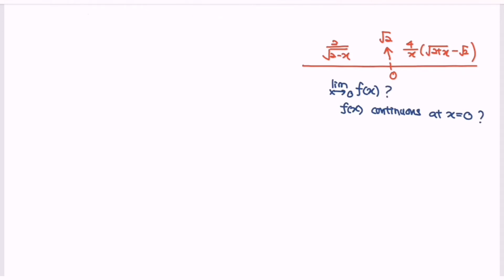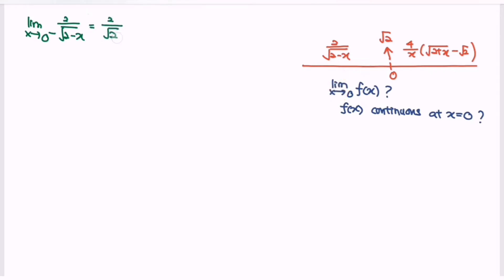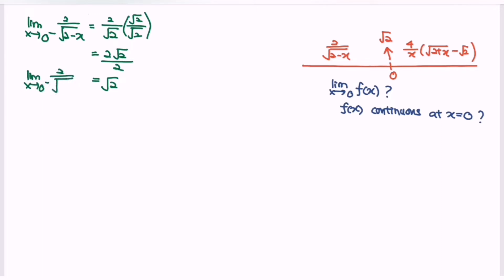Kindly focus on the left-hand limit: the limit when x approaches 0 from the left for the function 2 over square root of 2 minus x. Kindly substitute the value 0, and we will have 2 over square root of 2. Rationalizing the denominator by multiplying with the conjugate, which is square root of 2. Simplifying, we get 2 multiplied with square root of 2 over 2. So finally the answer is square root of 2. The limit when x approaches 0 from the left for the function 2 over square root of 2 minus x gives y approaching square root of 2.